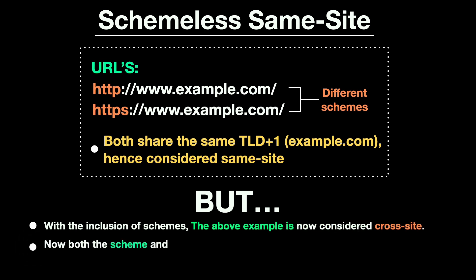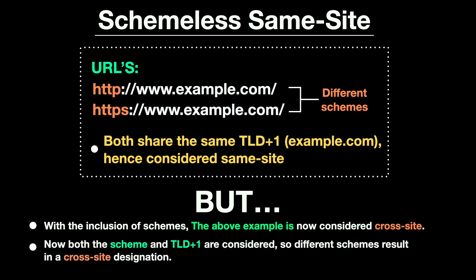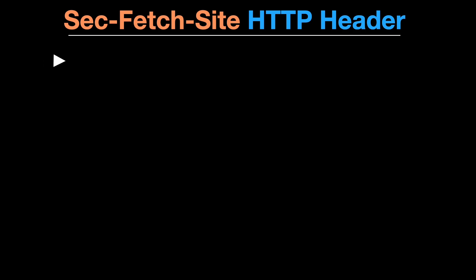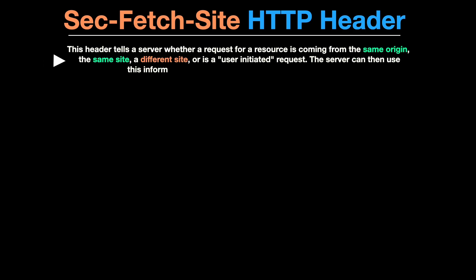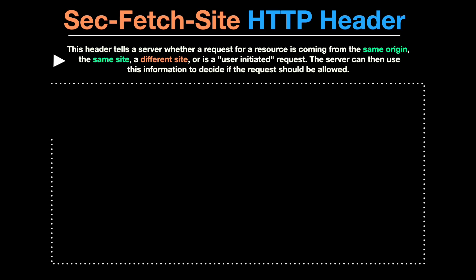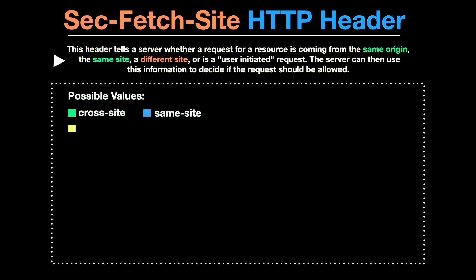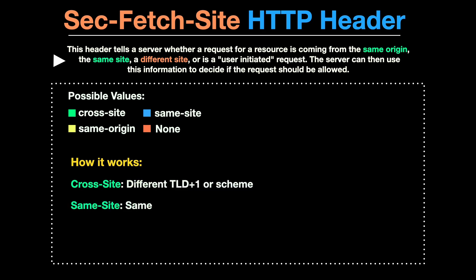These days, modern browsers use a special HTTP header called Sec-Fetch-Site to determine if a request is same-site, same-origin, or cross-site. This header helps enforce security policies and protect users from malicious activities. It has four possible values: cross-site, same-site, same-origin, and none. Browsers set these values automatically, so you can trust them for security decisions.